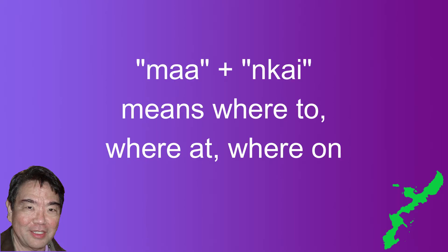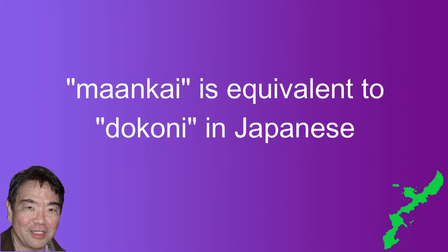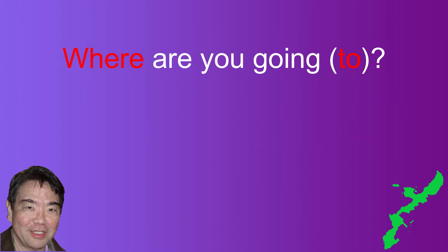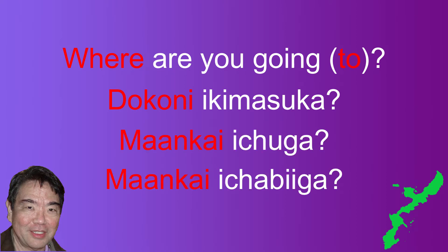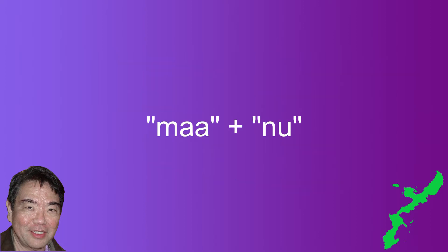The next example is "ma" used with the sentence particle "unkai" that we covered in video 27. "Mankai" means "where to," "where at," or "where on" depending on usage. In Japanese it is equivalent to "doko ni." An example is "where are you going?" In Japanese: "doko ni ikimasu ka." In Uchinaguchi: "mankai ichuga" in casual form and "mankai ichabi ga" in polite form.